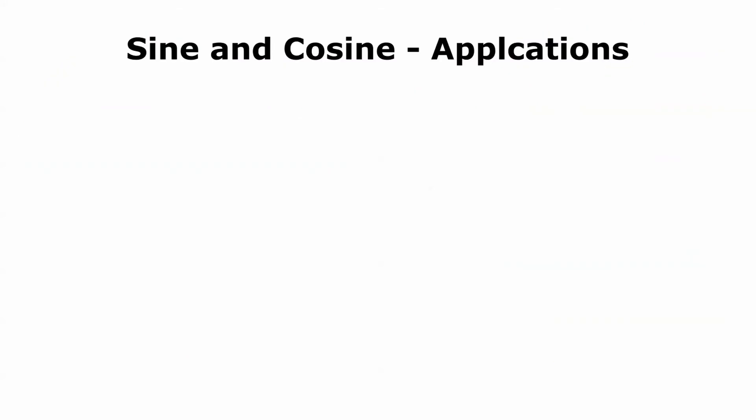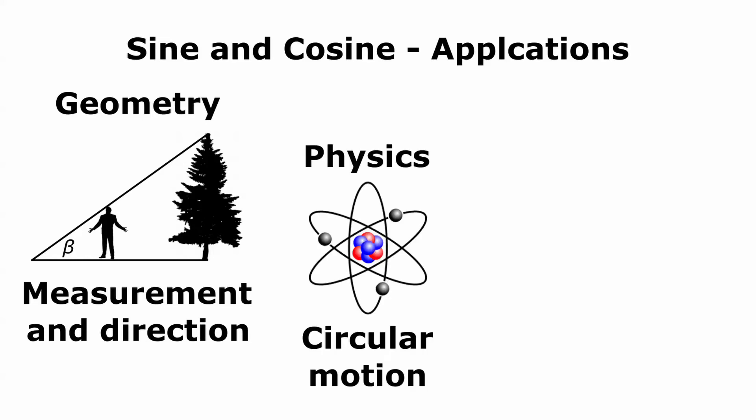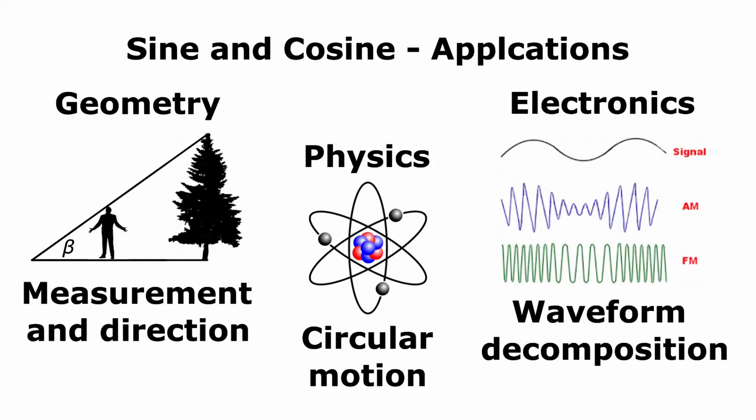What's the use of sine and cosine in electronics? There are a million uses for sine and cosine in geometry. We encounter it all the time in everyday life, where they help us derive distances and directions. In physics, sine and cosine help understand anything to do with circular motion. In electronics, that's us, sine and cosine are essential for decomposing and processing waveforms.